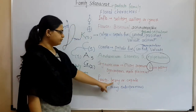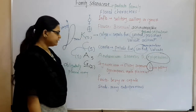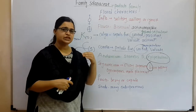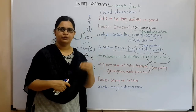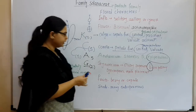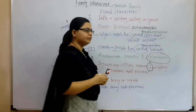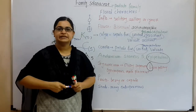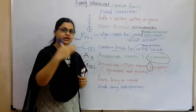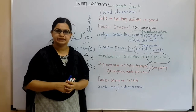Fruits are of the berry type or capsule. Seeds are endospermic — they have an endosperm. Also, the calyx is persistent, meaning it remains with the fruit even during fruit formation.